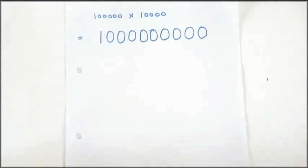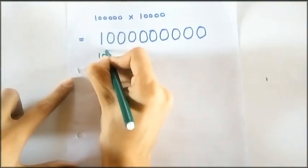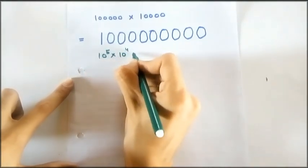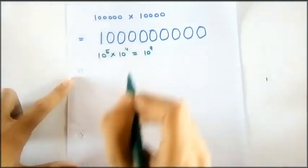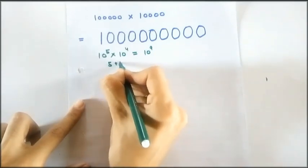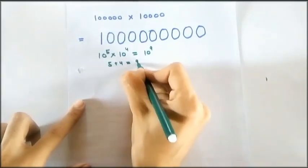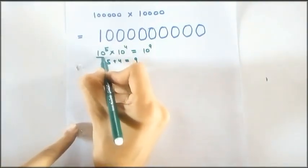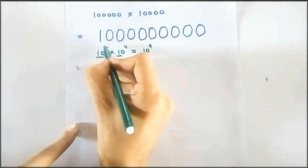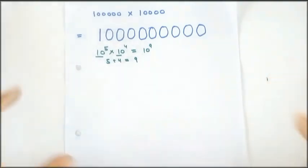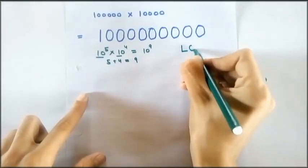We can also write it as 10 raised to the power 5 multiply by 10 raised to the power 4 is equal to 10 raised to the power 9. So, we just added the powers - that is 5 plus 4 is equal to 9. So from here, a very interesting thing comes up: that if bases are same, then the power adds. And this is the foundation of logarithms.